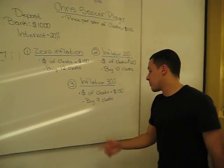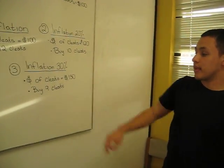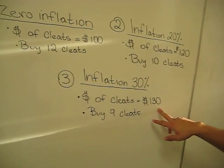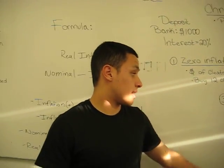And here's a third example. All right, now we have a 30% inflation rate, and the price of the cleats goes all the way up to $130. And now he can only buy 9 cleats.